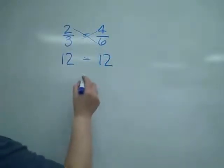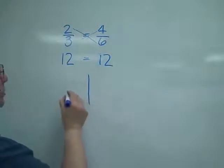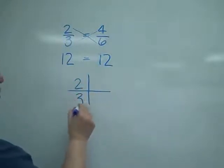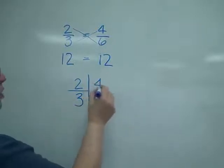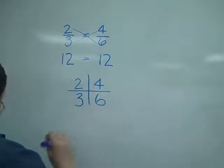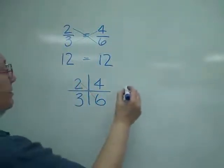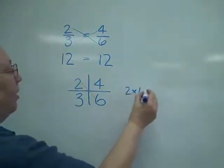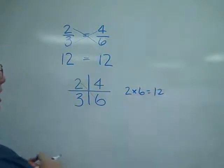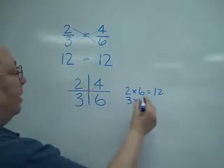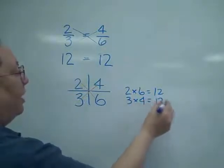The way I often set them up is in what I call the grid, where I have the 2 and the 3, the 4 and the 6. And I am going to multiply the 2 times 6 gives me the 12. Likewise, the 3 times 4 also gives me the 12.